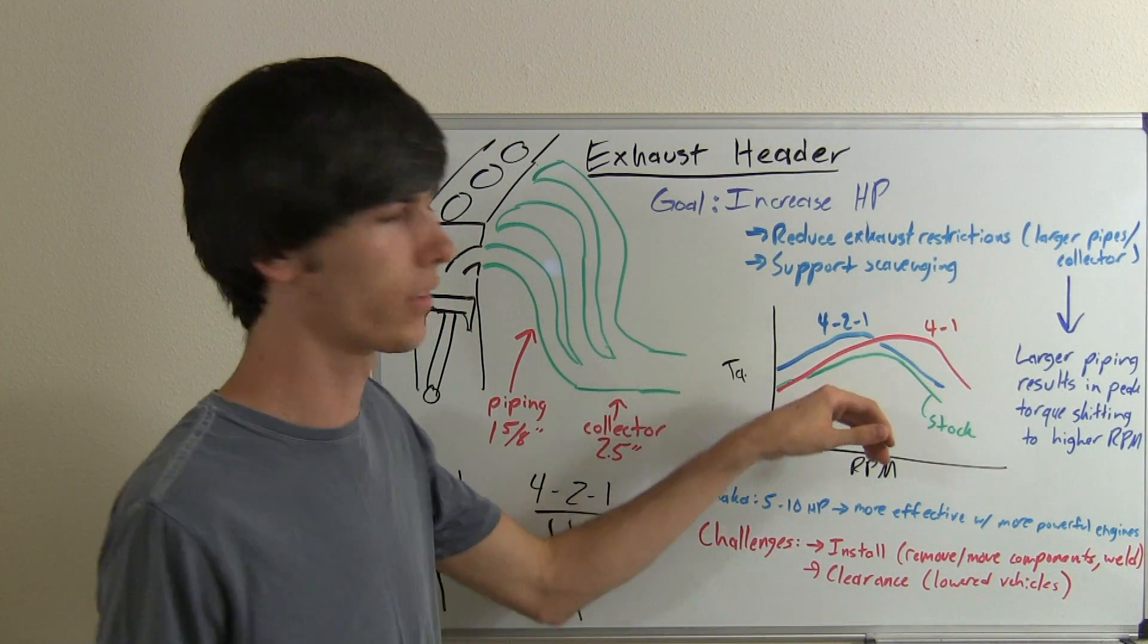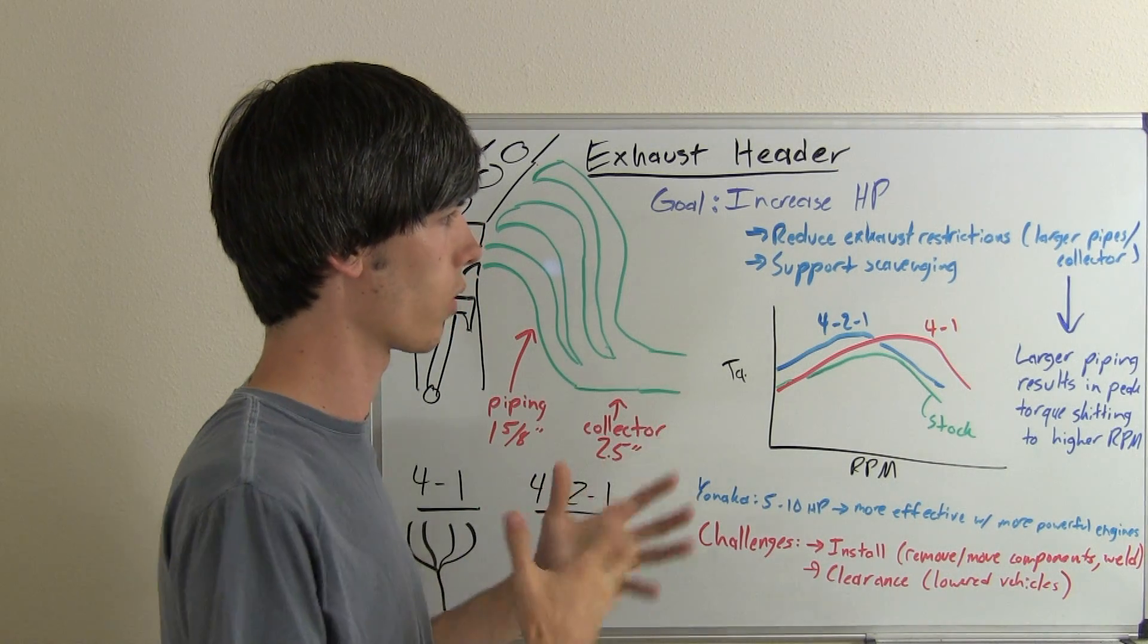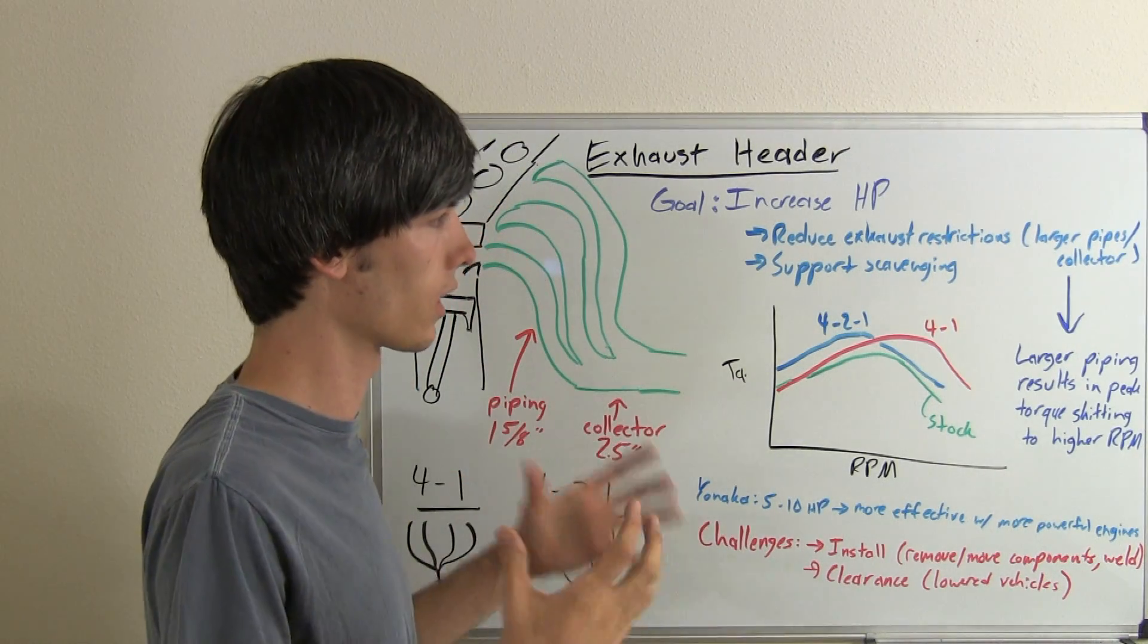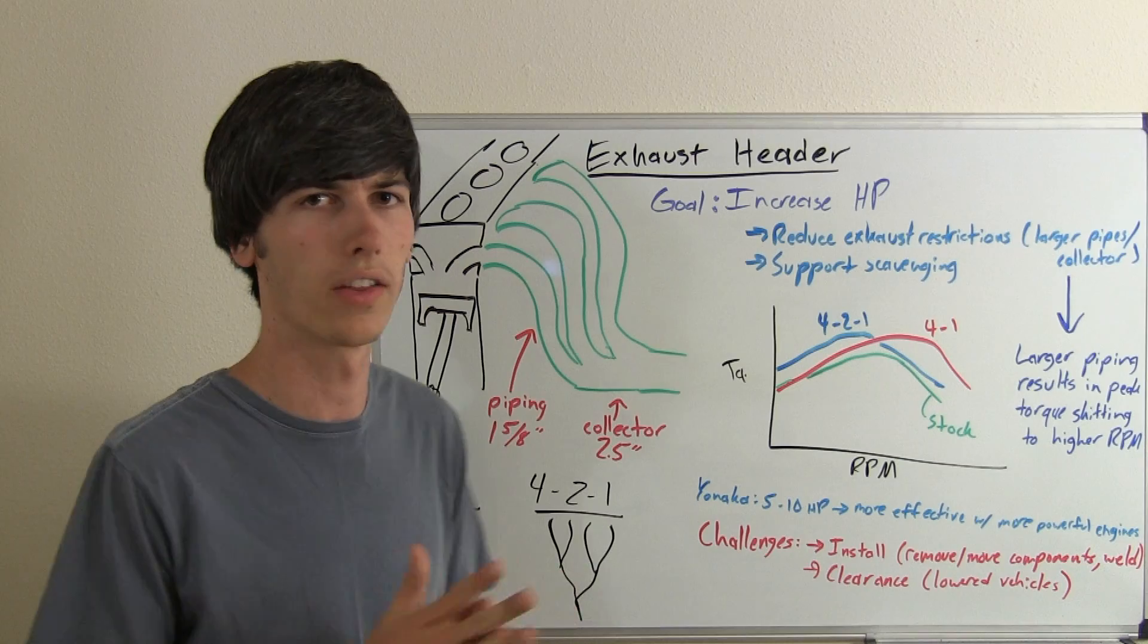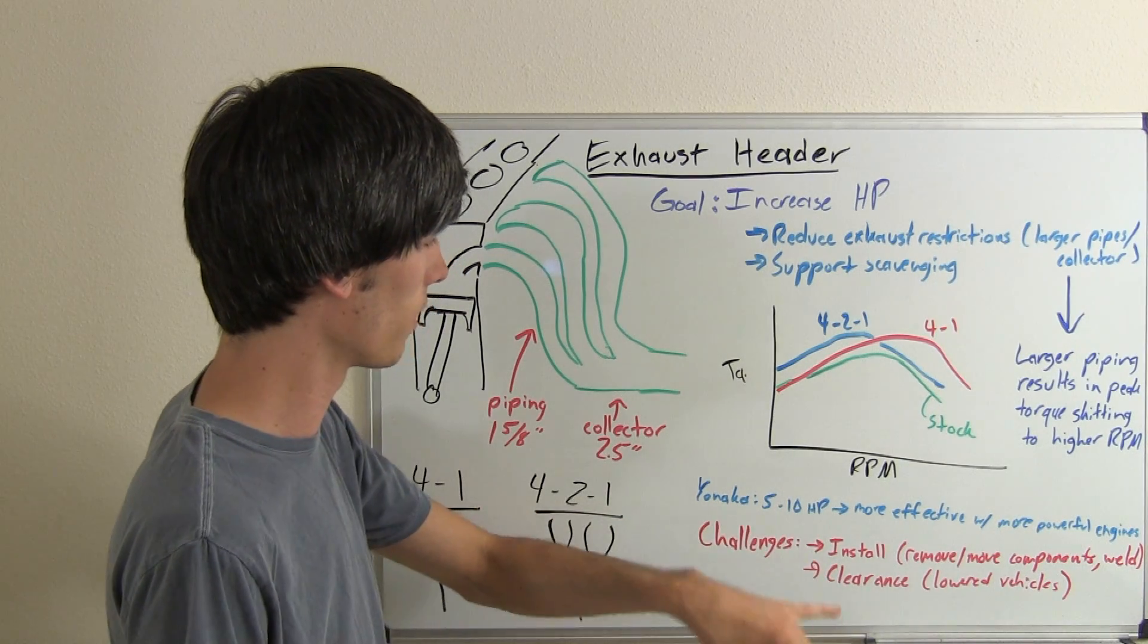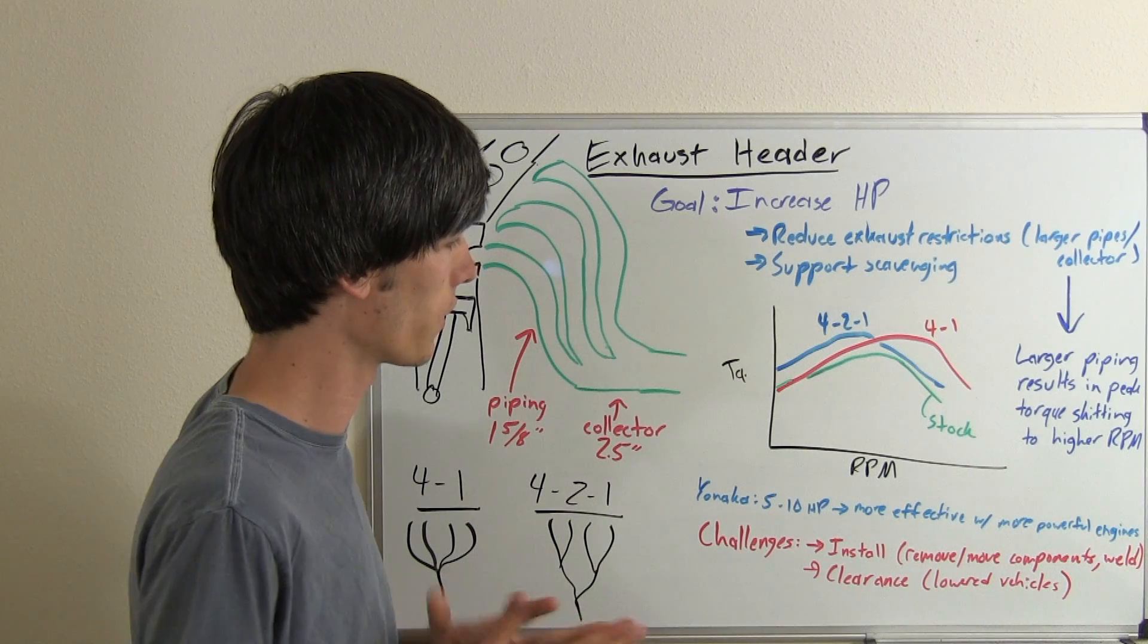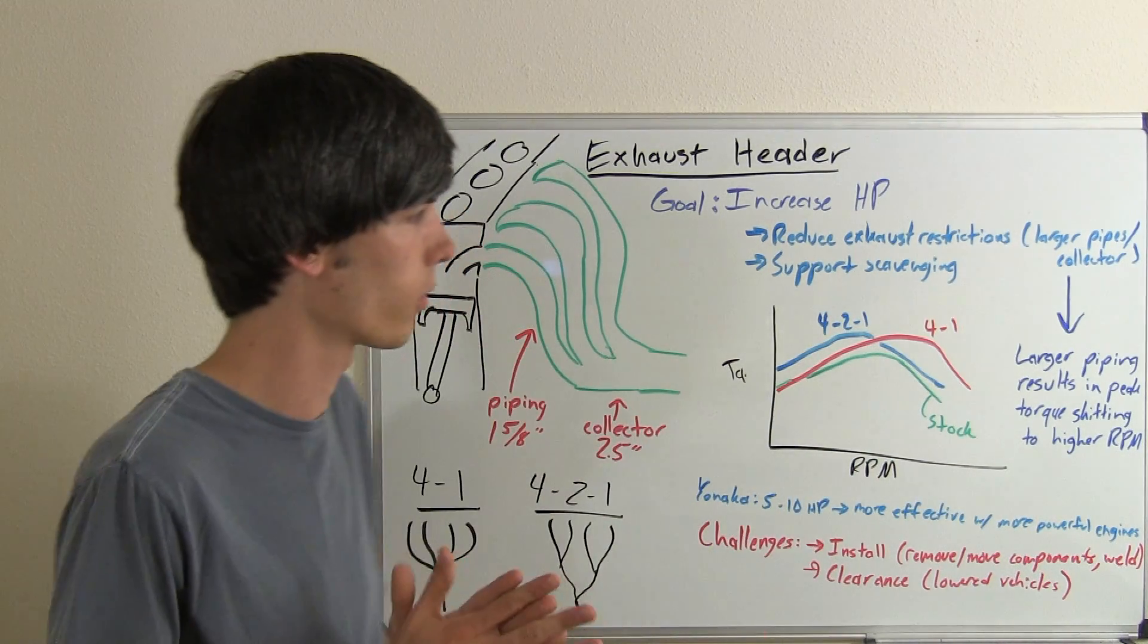Of course, with these kinds of things with larger piping, you're going to want to match it to your horsepower. If you have a very low horsepower engine, getting a larger header may not be beneficial. I go more into this in my video on cat-back exhausts. Yanaka says the header they supplied is good for about 5 to 10 horsepower on stock engines, and of course that's more effective if you have a more powerful engine.